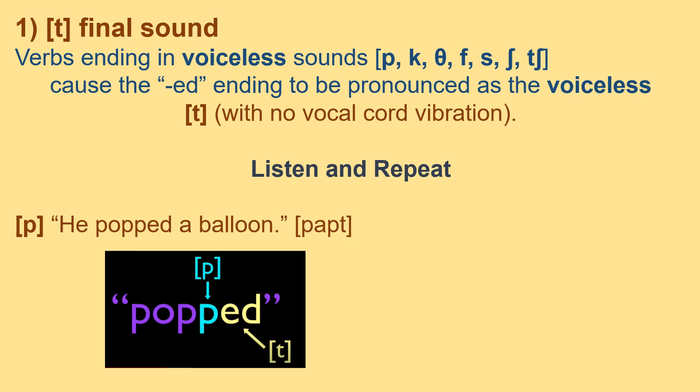Rule 1 — /t/ final sound: verbs ending in voiceless sounds like /p/, /k/, /f/, /s/, /ʃ/ cause the -ed ending to be pronounced as the voiceless /t/, with no vocal chord vibration. Listen and repeat: 'He popped a balloon' — popped.